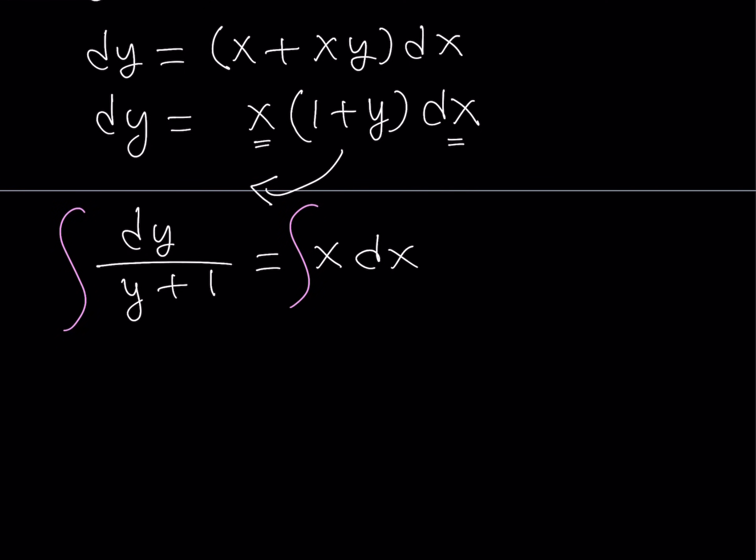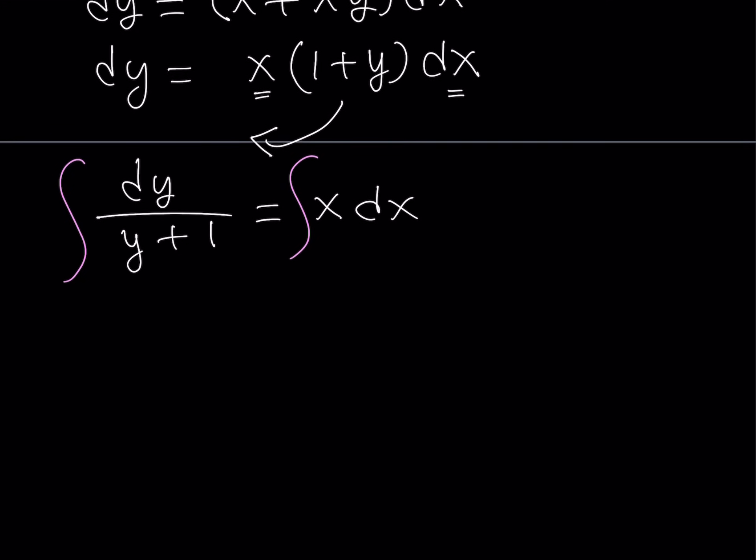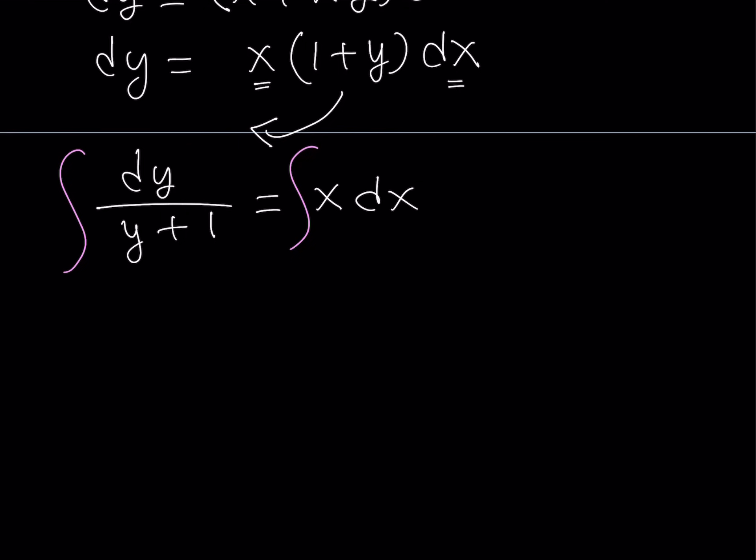Now, if you integrate both sides, you're going to get nice results, because 1 over y plus 1 is easy to integrate. x is very easy to integrate. Of course, on the left, it's a y. On the right, it's an x. So, the integral of 1 over y plus 1 is ln. This is very similar to it, except we're adding a constant, so it's just going to be the same thing. We can write this as ln of the absolute value of y plus 1. Great. And then, the right-hand side is going to equal x squared over 2.